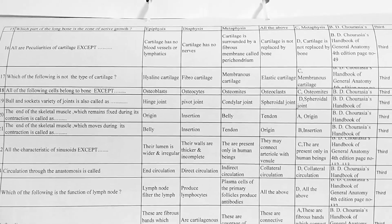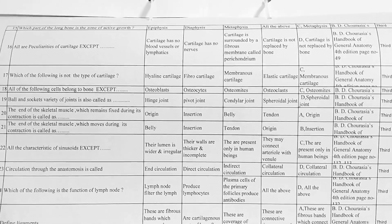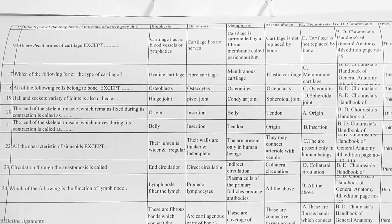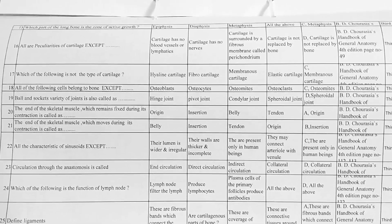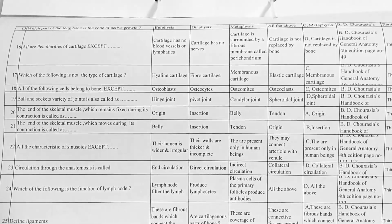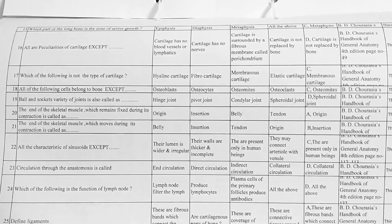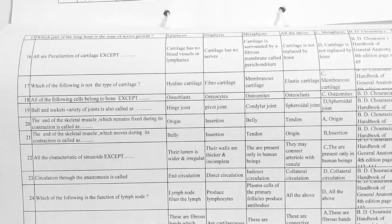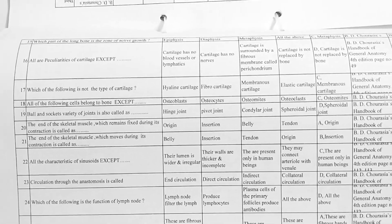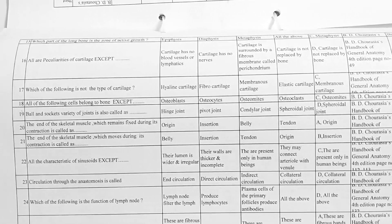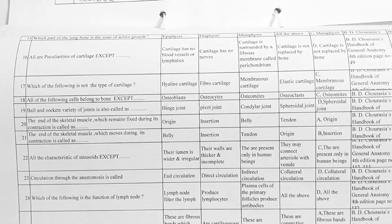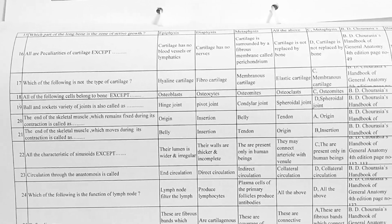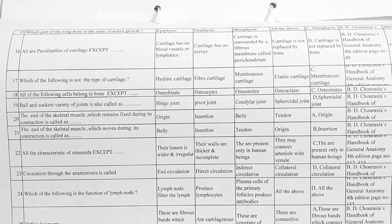Next, which part of the long bone is the zone of active growth? Options: A. epiphysis, B. diaphysis, C. metaphysis, D. all of the above. Correct answer is C, metaphysis.